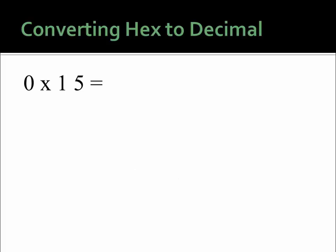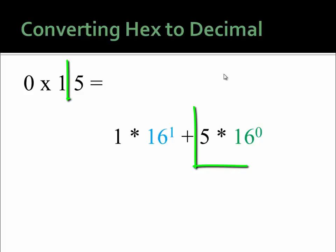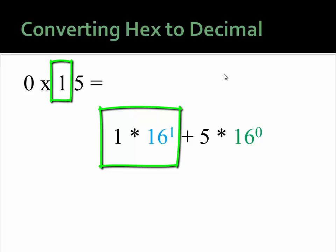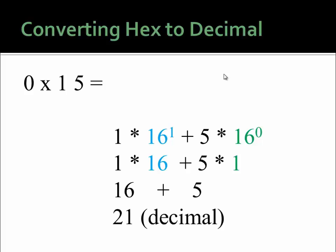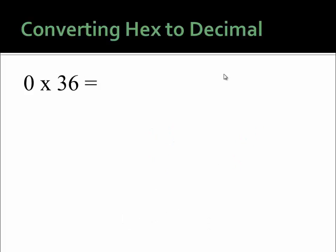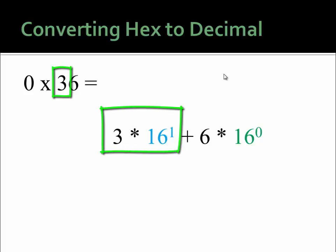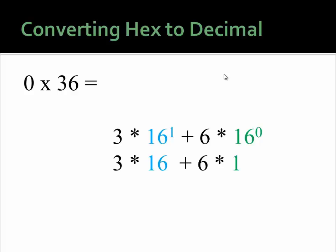Let's try another example: the hex number 15. You have five in the ones place, and one in the sixteens place. That math simplifies to 1 times 16 plus 5 times 1, which simplifies to 16 plus 5, or 21. Let's do one more example: the hex number 36. In the ones place you have 6, and in the sixteens place you have 3. Which simplifies to 3 times 16 plus 6 times 1, or 48 plus 6, which is 54 decimal.